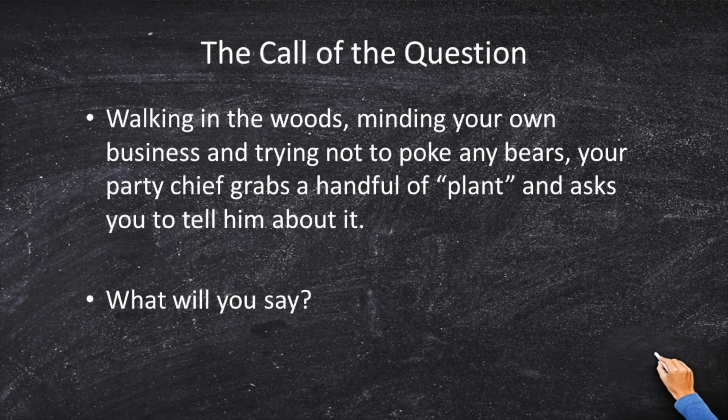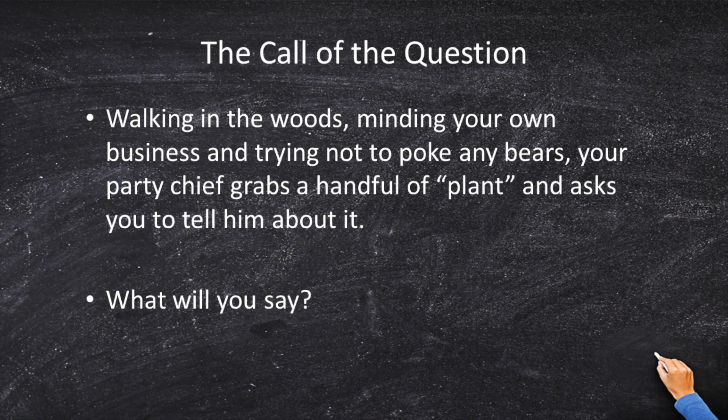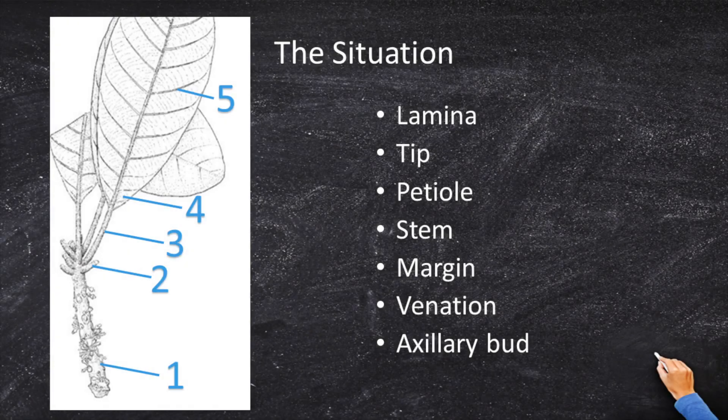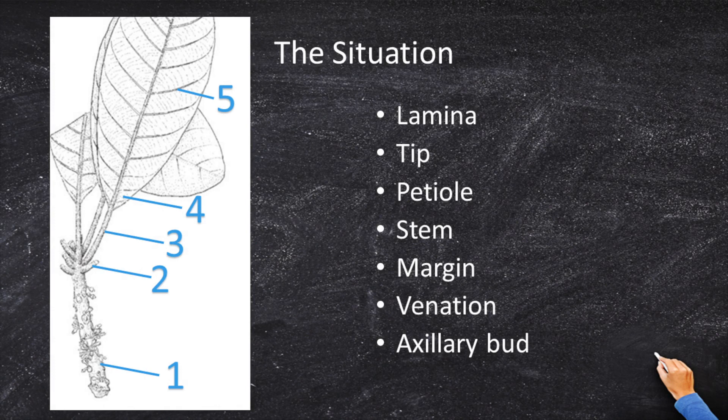Walking in the woods, pretending like you're Ralph Waldo Emerson or Henry David Thoreau, minding your own business along Walden Pond and trying not to poke any bears, your party chief grabs a handful of plant and asks you to tell them about it. So your boss, your party chief pulls out this leaf, which I've labeled for you in blue. And he says, Johnny or Susie, tell me about this plant.